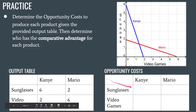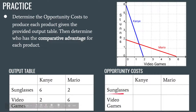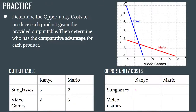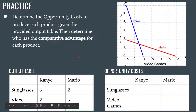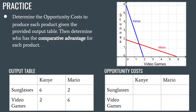We're going to fill in a table of opportunity costs — figuring out what Kanye gives up to produce a pair of sunglasses, what he gives up to produce video games, and the same for Mario. Pause the video and see if you can figure out what Kanye is giving up every time he produces a pair of sunglasses. If you don't get there, that's fine — I'll walk you through it. I'm curious to see how you do before I explain it step by step.